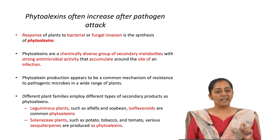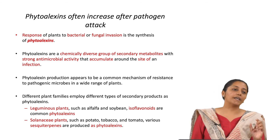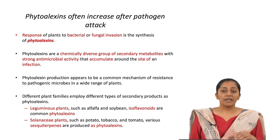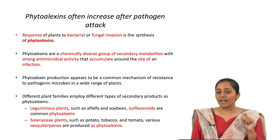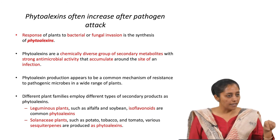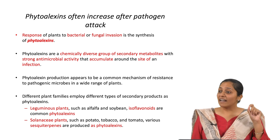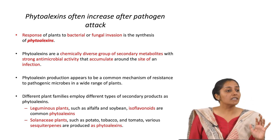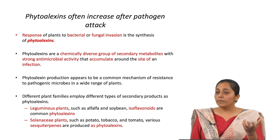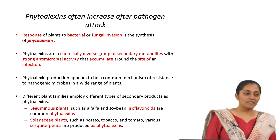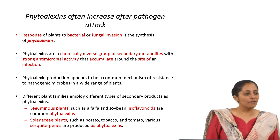A key response to bacterial and fungal invasion is the synthesis of phytoalexins. Phytoalexins are not always present as constitutive defense but are produced as a result of damage caused by a particular pathogen. They are a chemically diverse group of secondary metabolites with strong antimicrobial activity that accumulate around the site of infection. The speed of de novo synthesis of phytoalexins determines the survival capability of a plant species against that pathogen — that is why some plants survive and others do not.